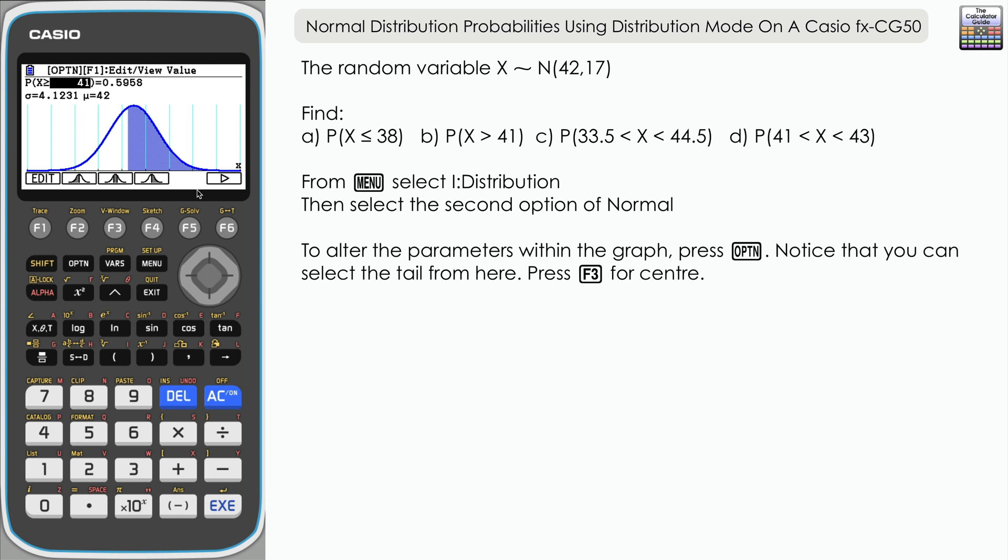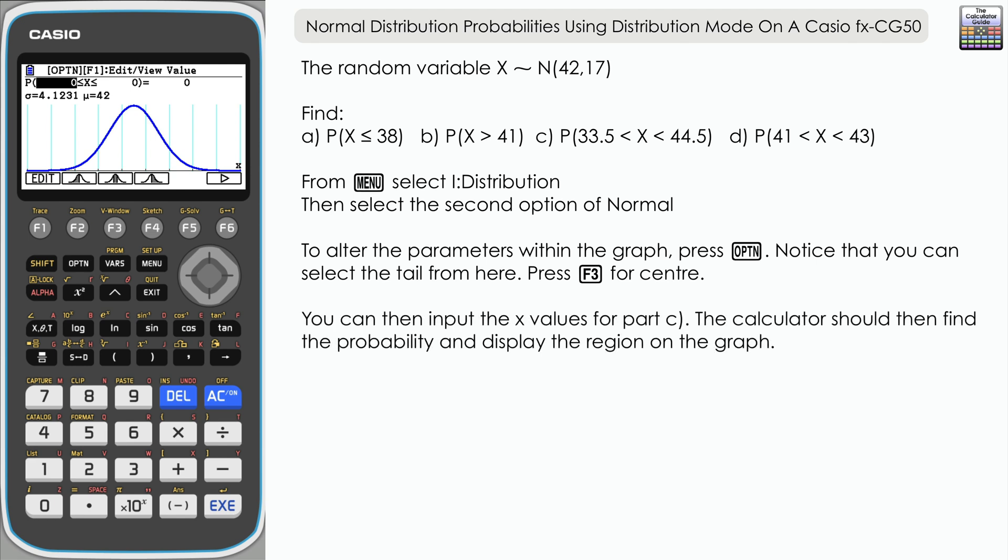For this question, that's option F3. You can see at the top it's ready for us to input the values for our upper and lower limits. The lower bound is 33.5—press execute.